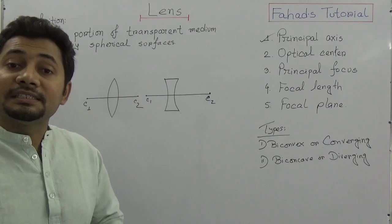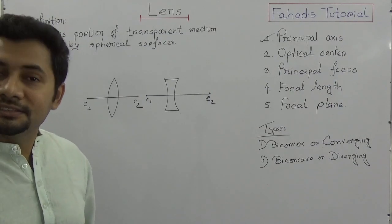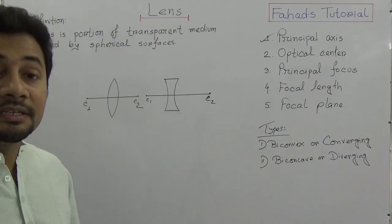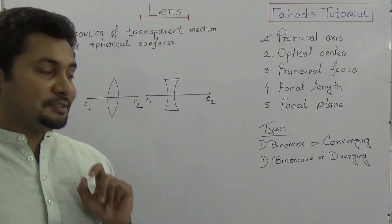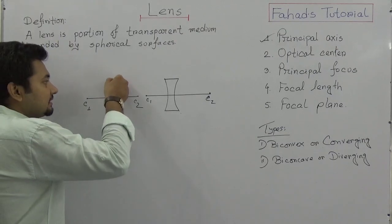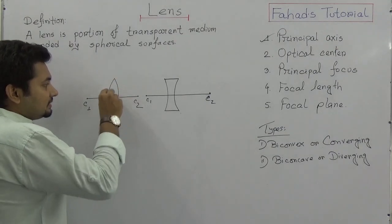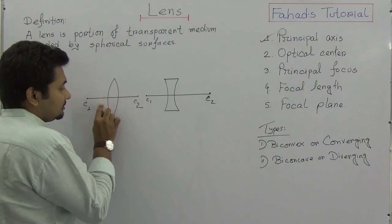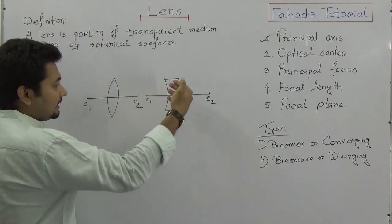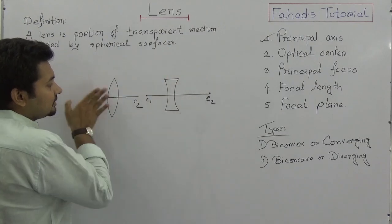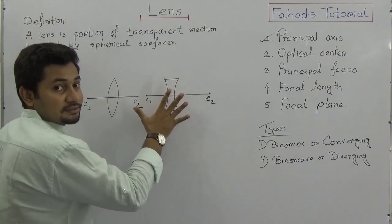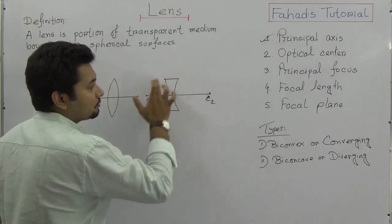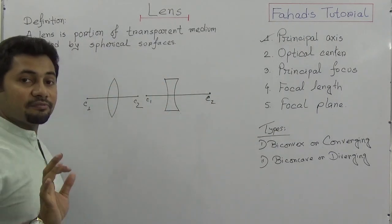So what is a lens? We can say that a lens is a portion of transparent medium bounded by spherical surfaces. As the refractive part is spherical and convex, that is why this is called biconvex. Light can enter the lens from either side, so it is actually a refractive medium.